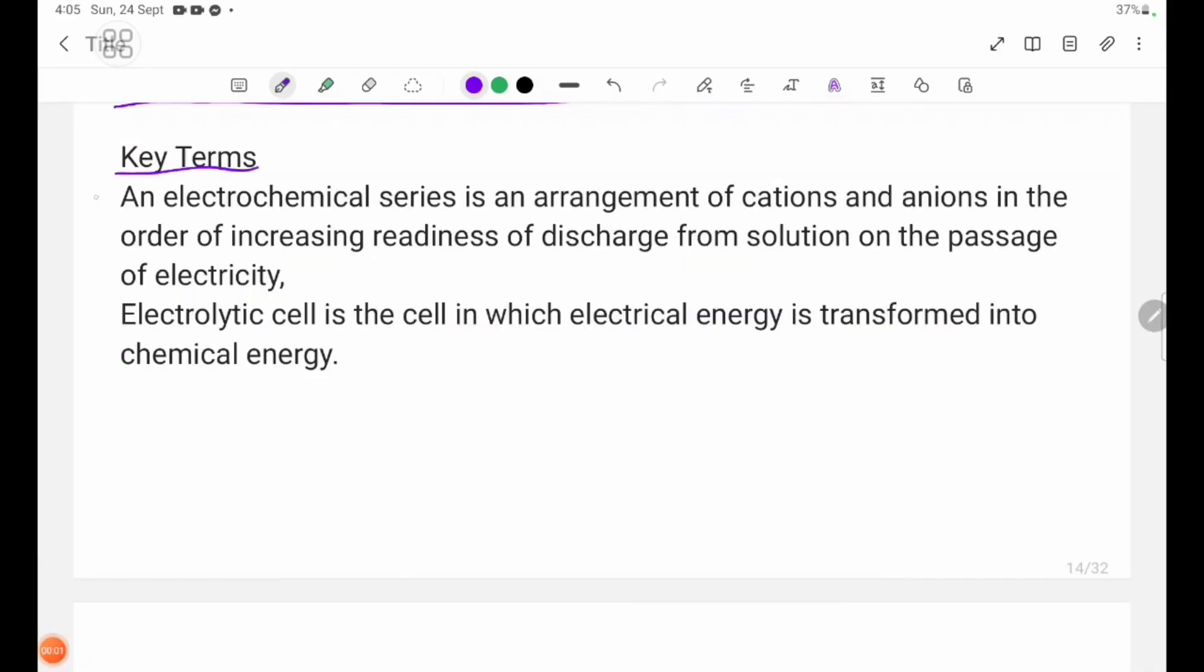Key terms number one. An electrochemical series is an arrangement of cations and anions in the order of increasing readiness of discharge from solution on the passage of electricity.